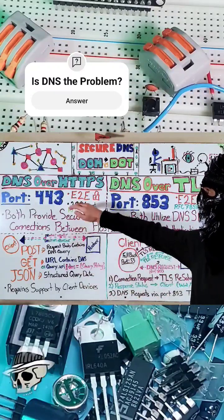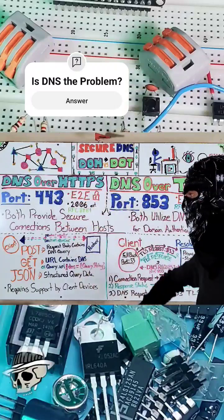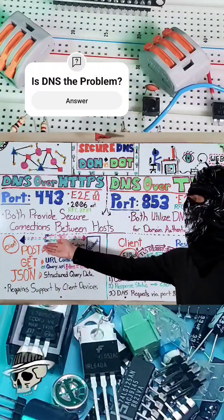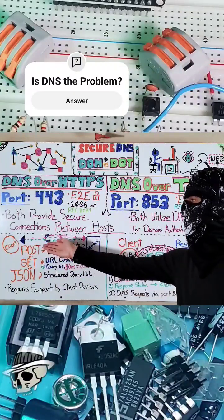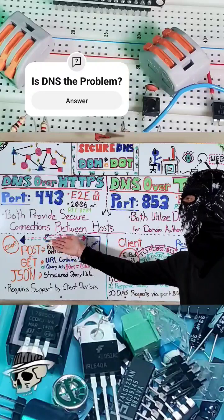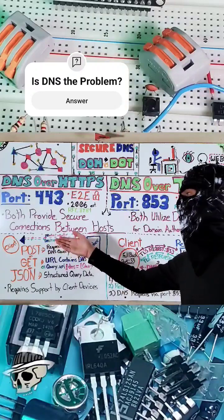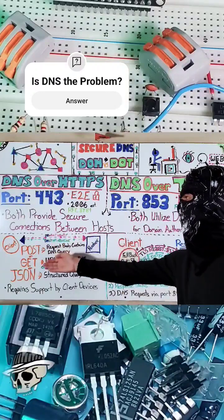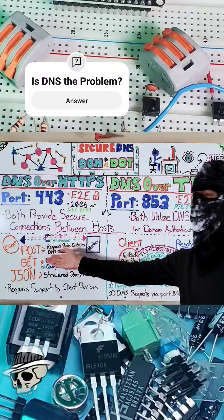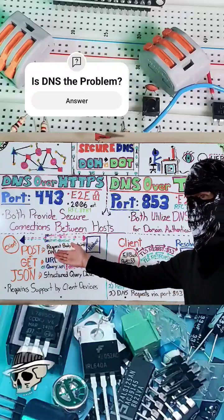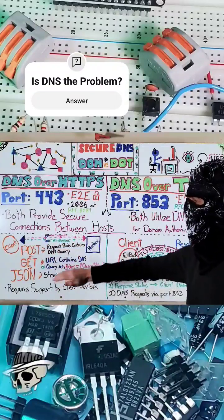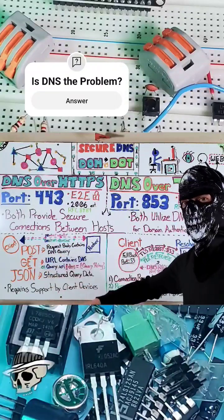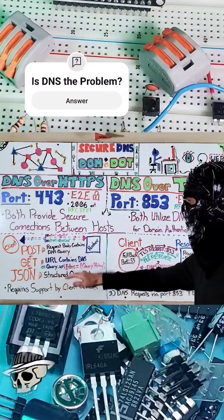Specifically with DNS over HTTPS, we have our client and our resolver, and we essentially send our transmission — which is our HTTPS encrypted DNS request — and it responds back with the DNS HTTPS response. You can send a POST or a GET request and still achieve the same goal.